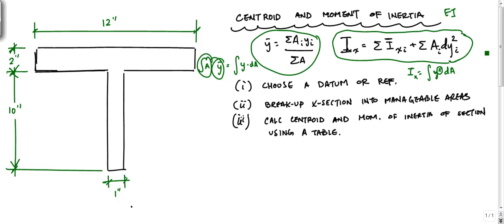I'm going to show you how to calculate the centroid of this T-shape — I also showed the T-shape centroid calculation in another video. Here I'll show it in a nice clean way. The first step is to choose a datum or reference, because in order to define a distance we need a reference or an origin. Second, we're going to break up the cross-section into manageable areas — shapes where we already know the moments of inertia for, things we can look up in the back of a book.